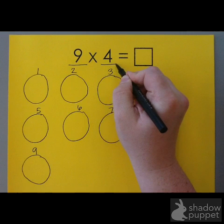Next, I have to think about how many are in each group. Since it's 9 groups of 4, I know there has to be 4 in each group. So inside each circle, I'm going to draw 4 little circles. Each little circle represents 1.